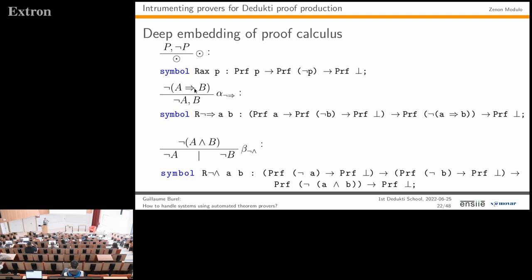For the α-rule, to obtain a proof that ¬(A→B) leads to contradiction, we use a proof that from a proof of A and a proof of ¬B leads to contradiction. For the β-rule, to obtain a proof that ¬(A∧B) implies contradiction, we must find a proof that ¬A implies contradiction and a proof that ¬B implies contradiction—because we have to close all branches.